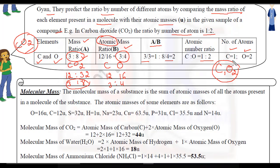Next is molecular mass. Molecular mass of a substance is the sum of atomic masses of all the atoms present in a molecule of the substance. A molecule is made of atoms, so we add up the masses of those atoms to get the molecular mass.